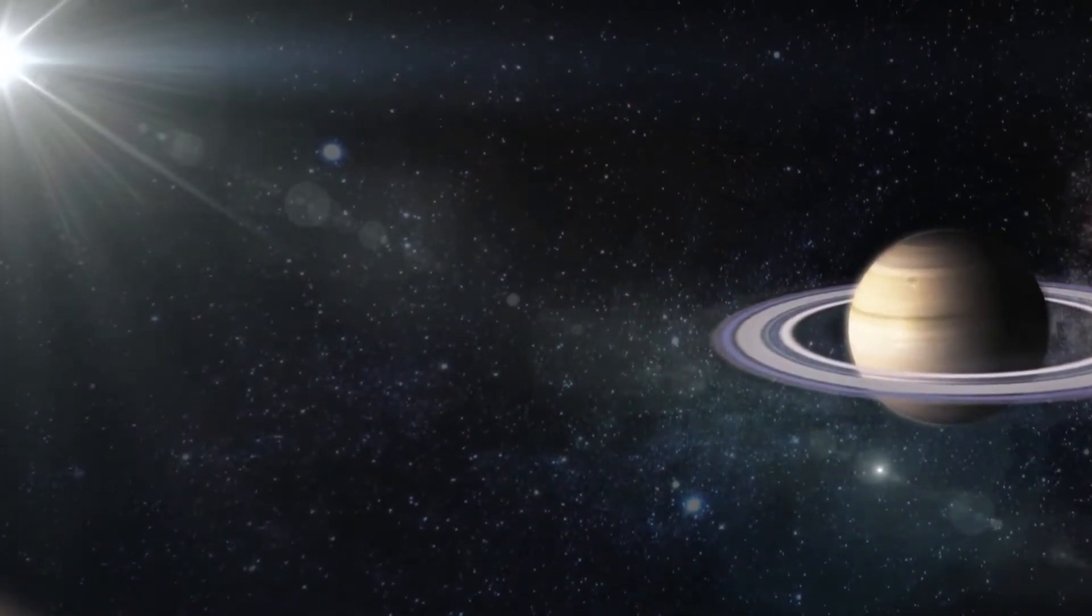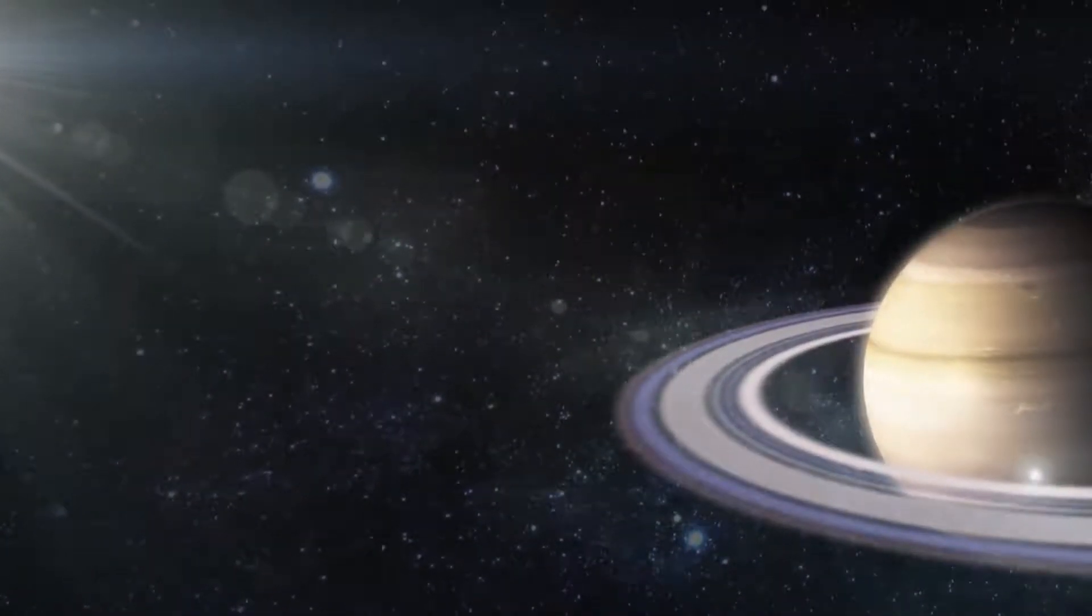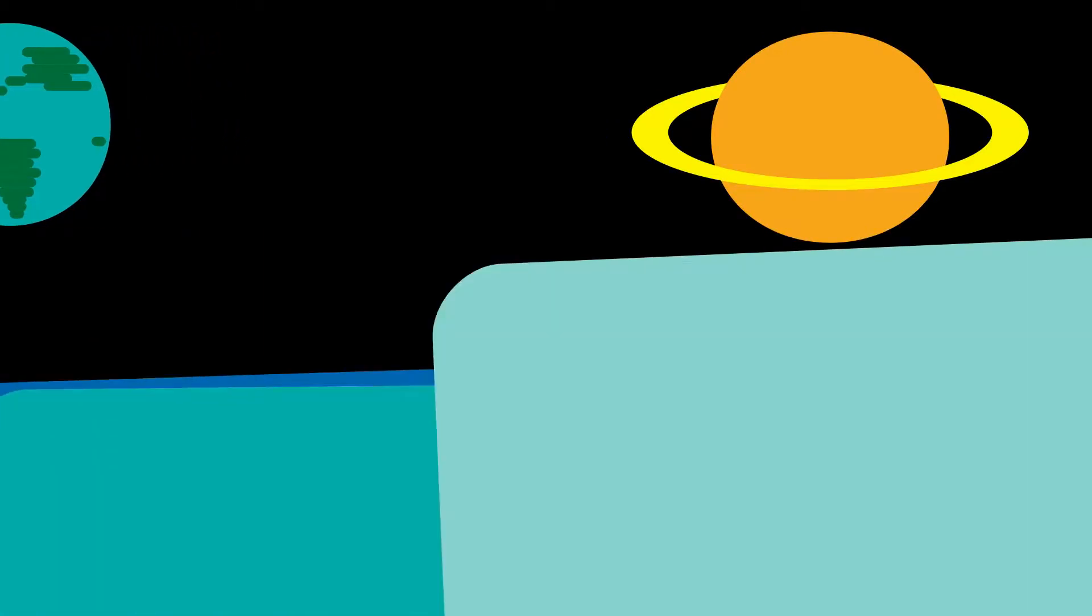Saturn is the sixth planet from the Sun and the second largest in the solar system after Jupiter. It is a gas giant, nine times larger than Earth but with only one-eighth the average density. That means, in theory, Saturn can float on water.